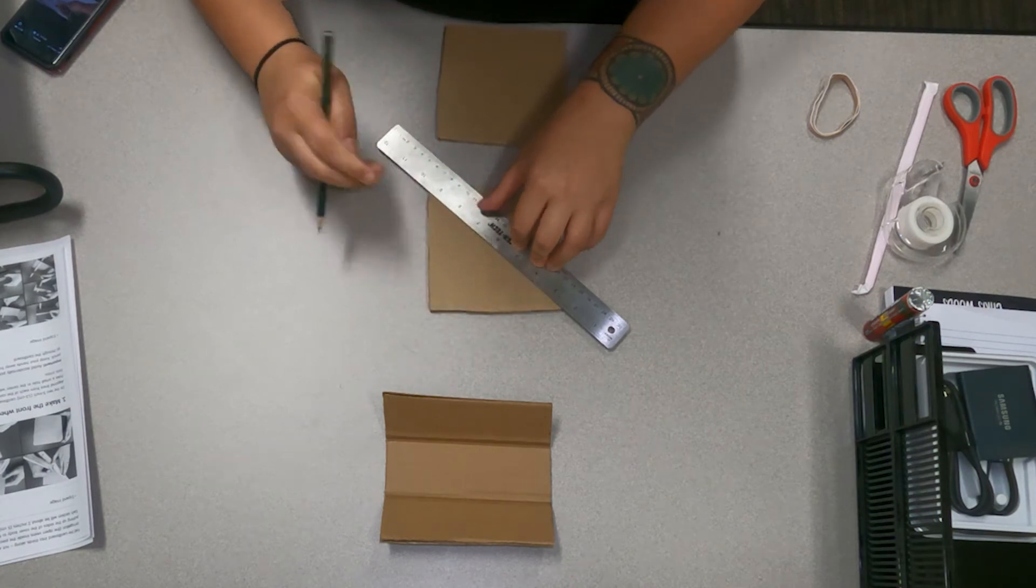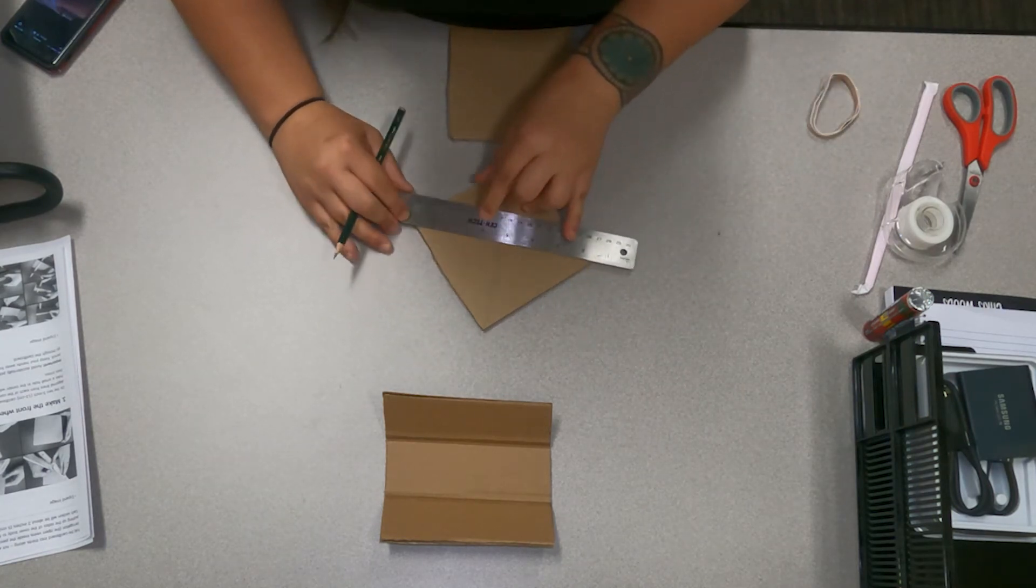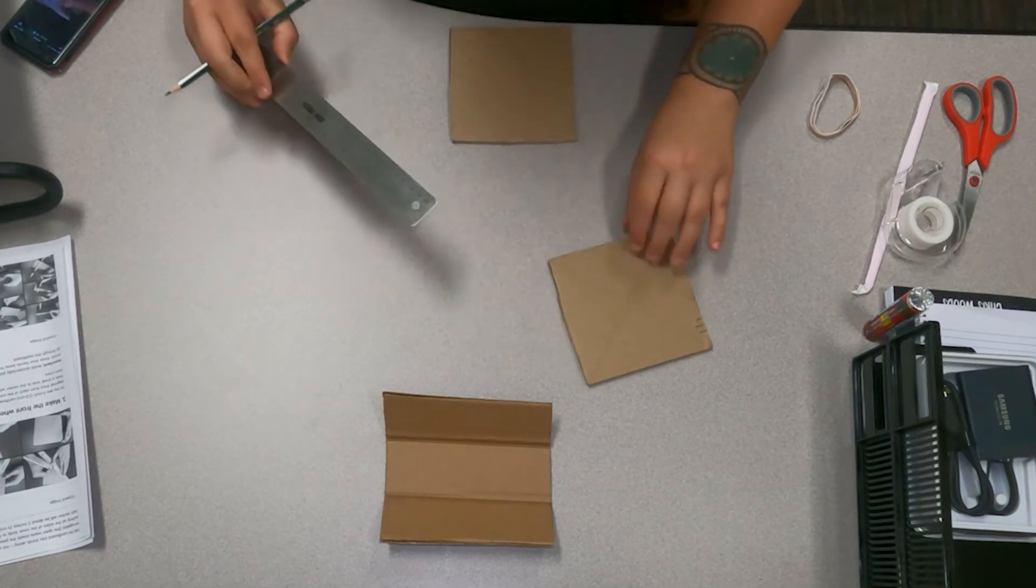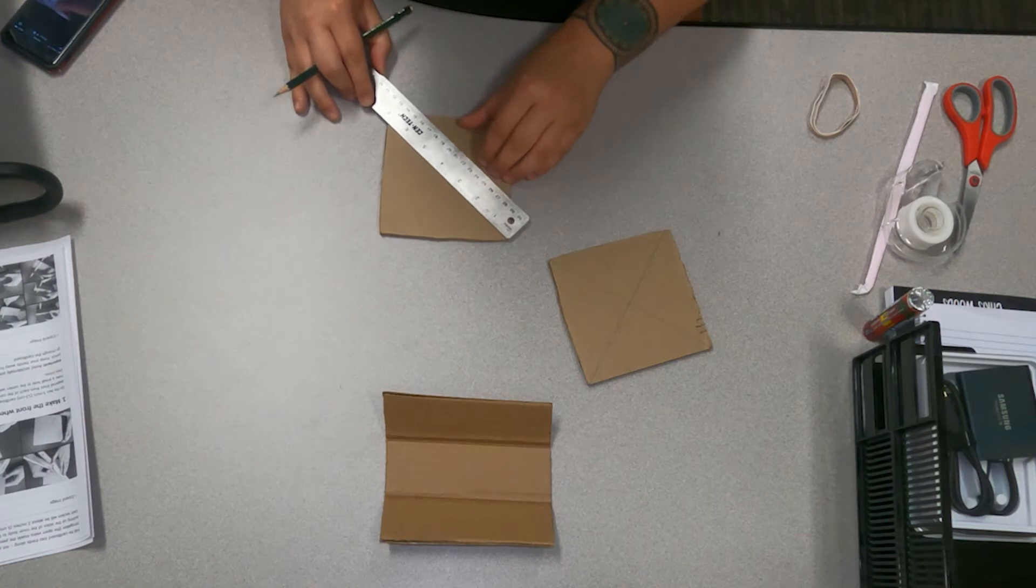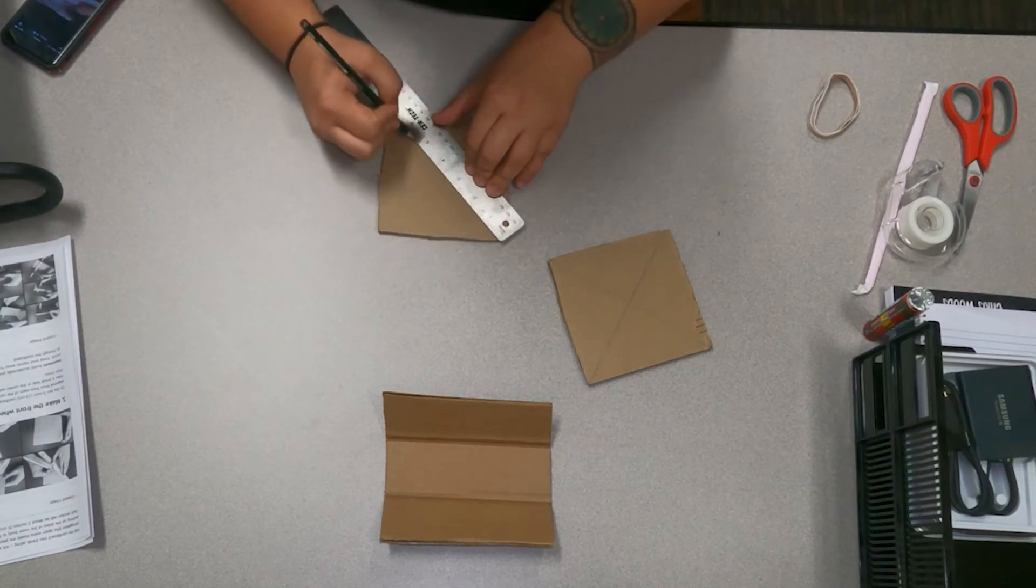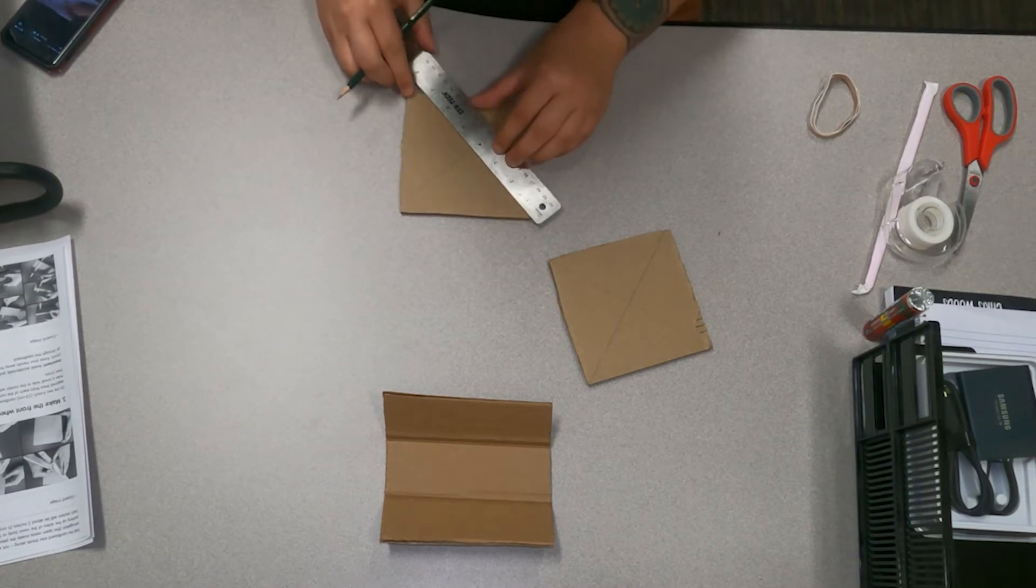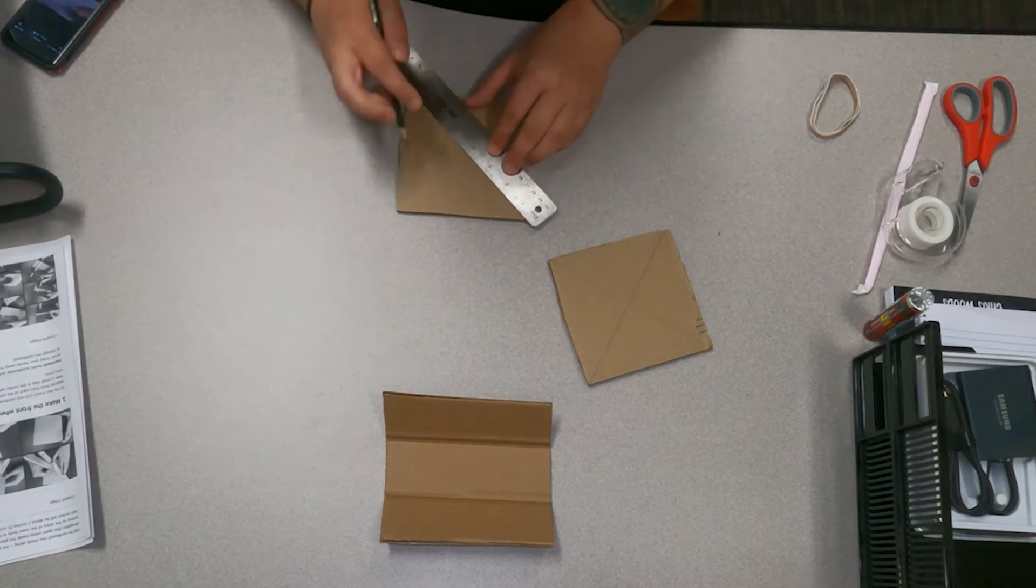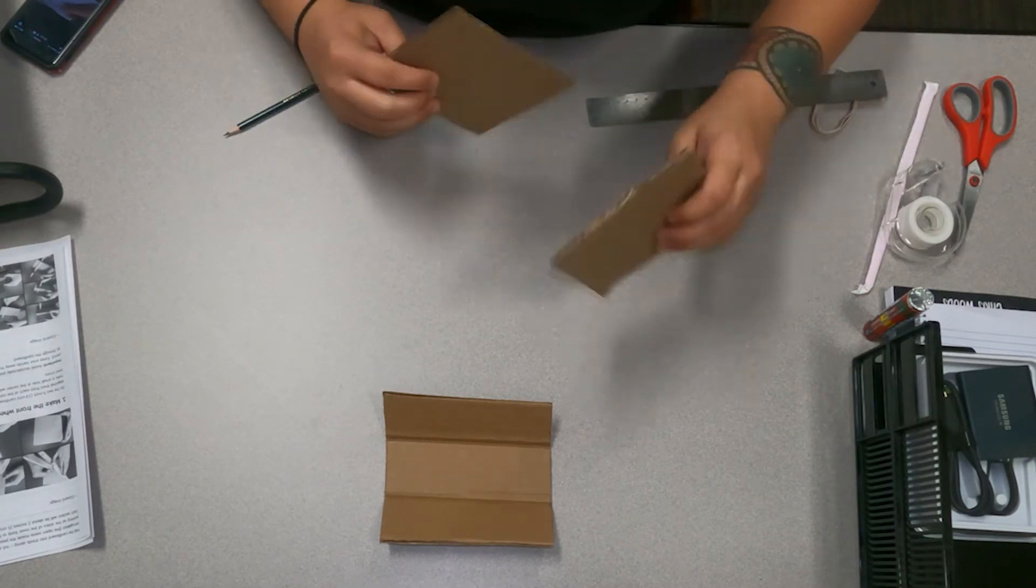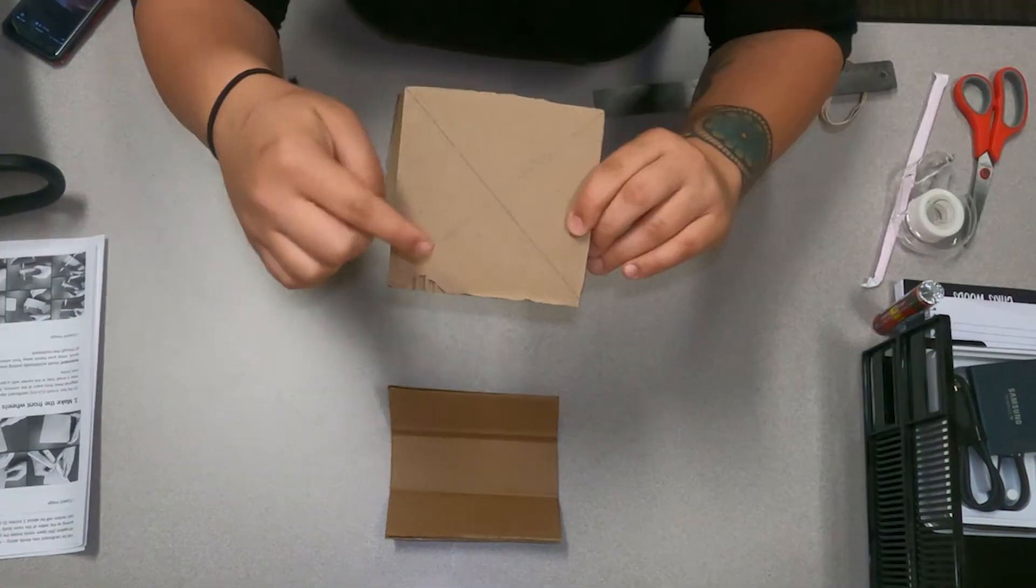You're gonna draw a line and you're gonna do the same thing on the opposite corners, and the same thing on the second five by five piece of cardboard.